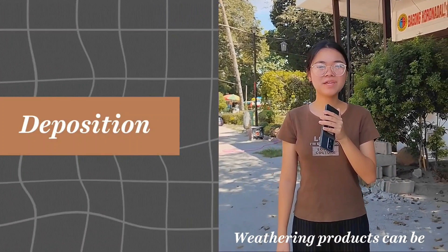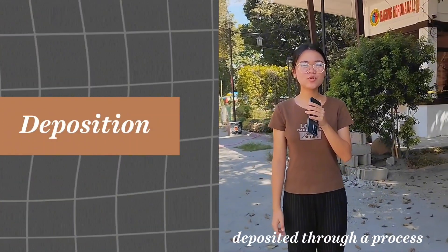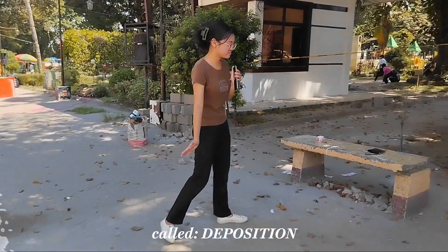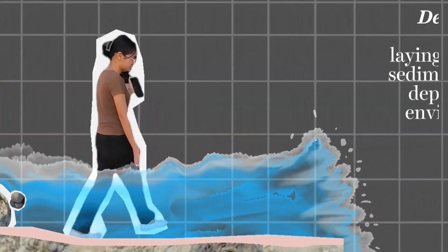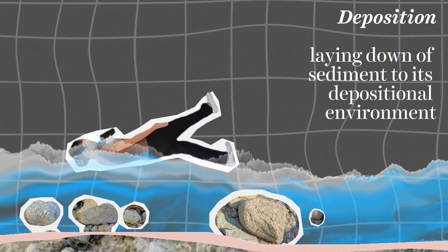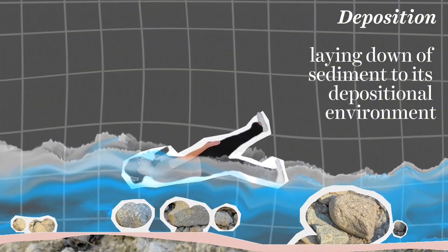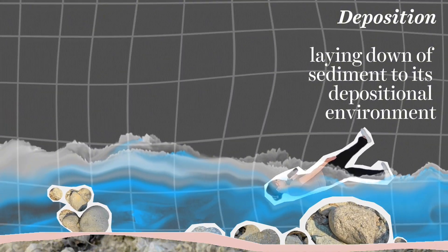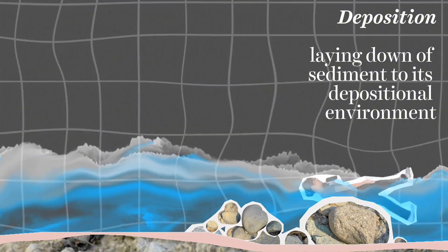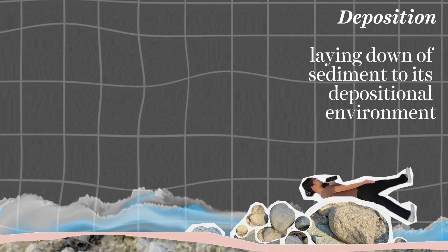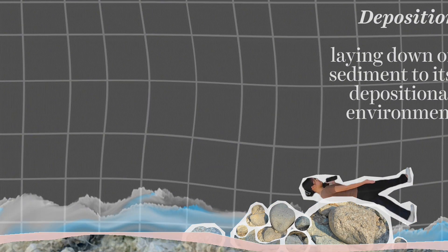Weathering products can be deposited through a process called deposition. This occurs when the transporting agents such as water, wind, ice, or gravity lose their momentum and are unable to carry the sediments any further.